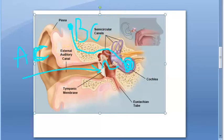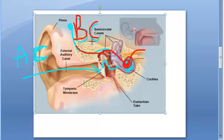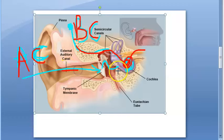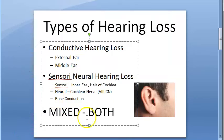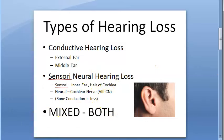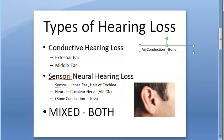If bone conduction is not working — meaning the person cannot hear via bone — that means the inner ear has a problem, indicating sensorineural hearing loss. If air conduction is not working, it can be either conductive or sensorineural hearing loss. But if bone conduction is not working, it is definitely sensorineural. Normally, air conduction is greater than bone conduction.